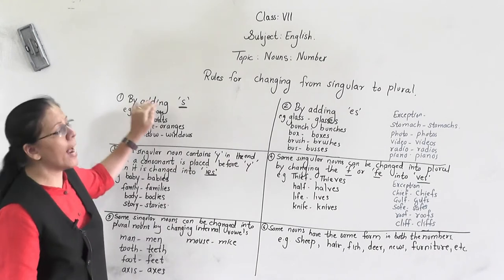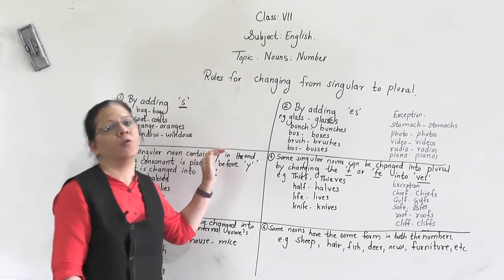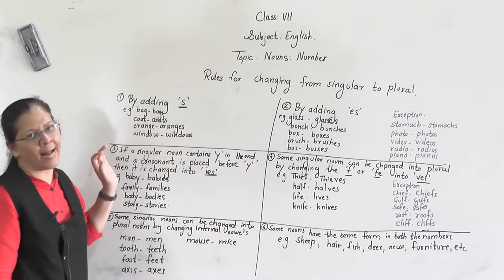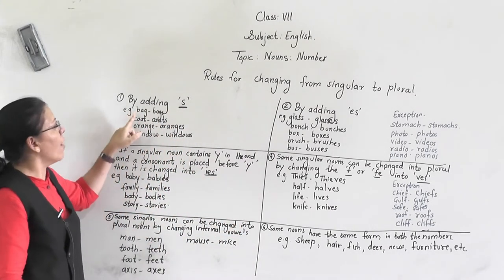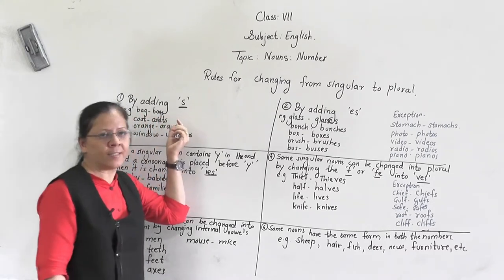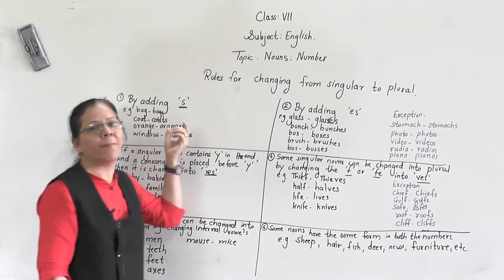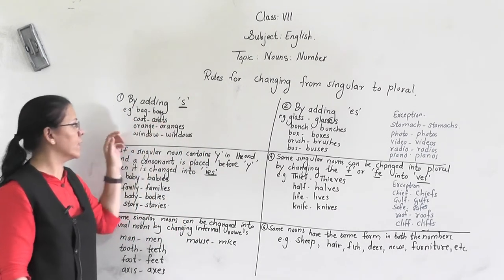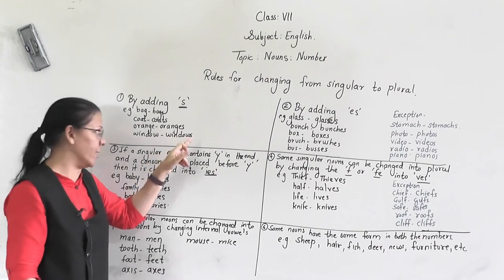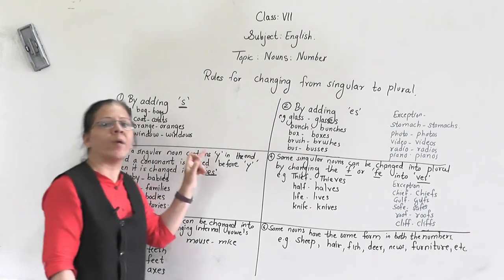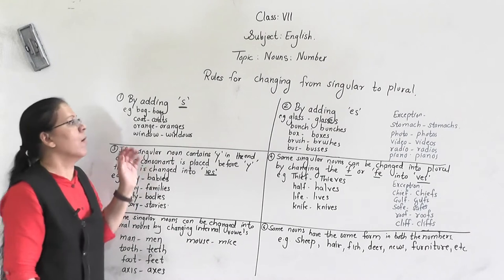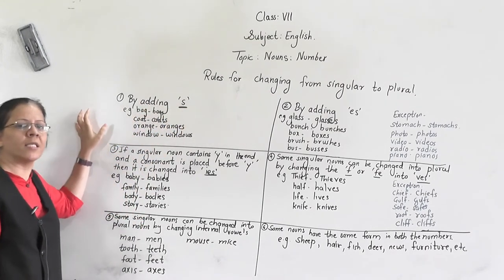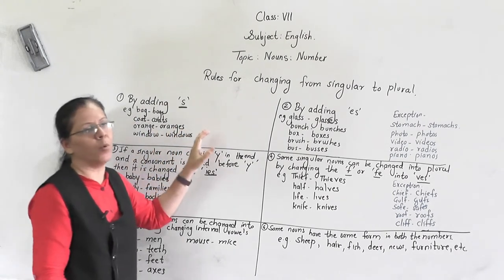Rule number one: by adding 's' to the singular noun at the end. For example, 'bag' — after adding 's' it becomes 'bags', which is a plural noun. Coat becomes coats, orange becomes oranges, window becomes windows, book becomes books. So by adding 's' we can change a singular noun into a plural noun.